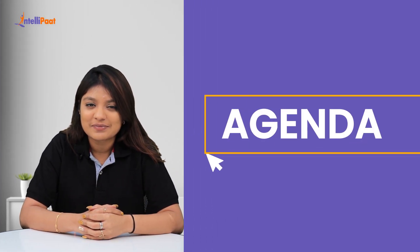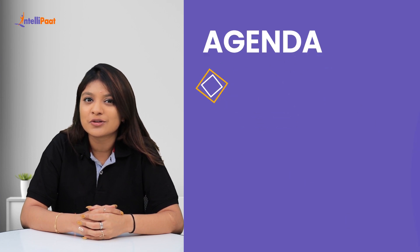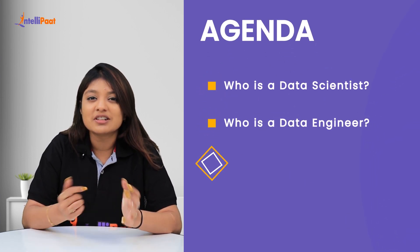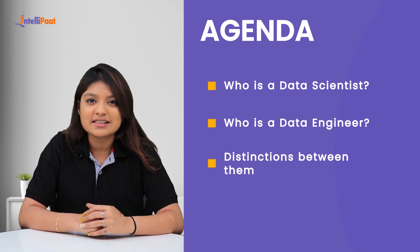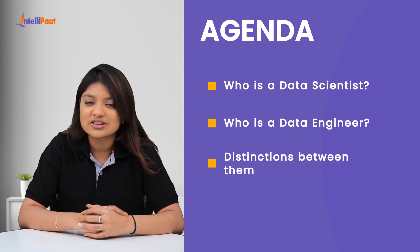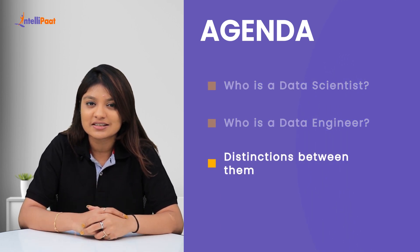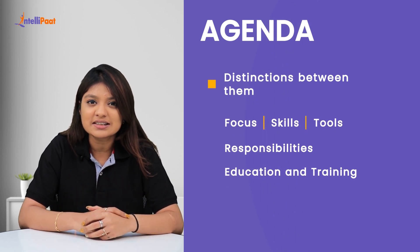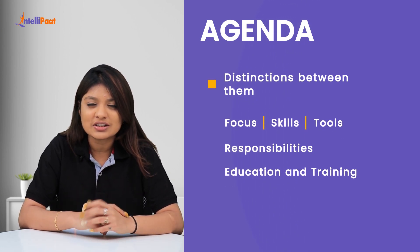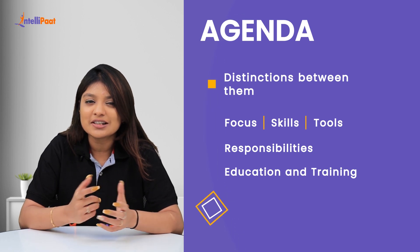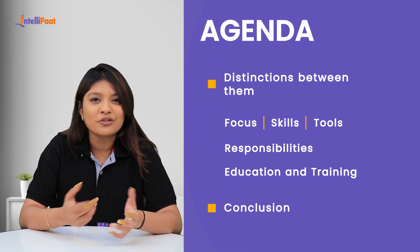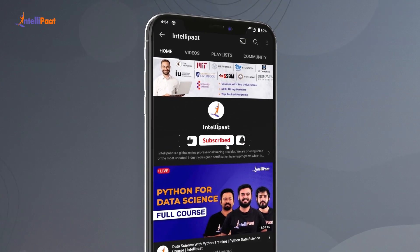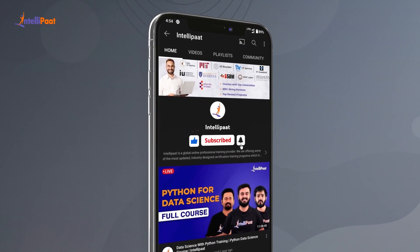Now let's take a look at the agenda. First, we have who is a data scientist. Next, who is a data engineer. After that, we will take a look at the distinctions between data scientists and data engineers based on the following broad categories: focus, skills, tools, responsibilities, education and training, and last but not the least, conclusion. Before we begin, please make sure you subscribe to our YouTube channel and hit the bell icon for regular updates from us.